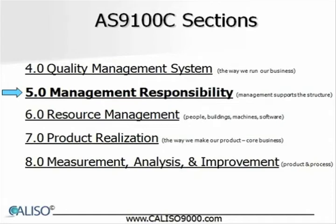Section 5 is titled Management Responsibility. This section defines the requirements for top management to actively participate in developing and implementing quality objectives and periodically evaluating the effectiveness of the quality management system. In addition to the ISO 9001 requirements, AS9100C requires that management measures product conformity and on-time delivery, and takes appropriate remedial actions when the planned result is not or will not be achieved.